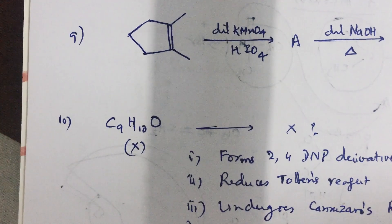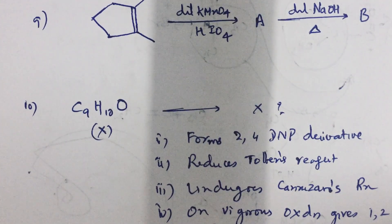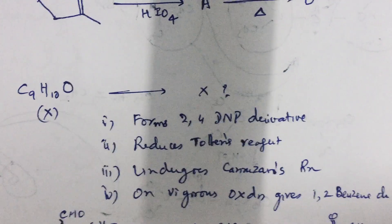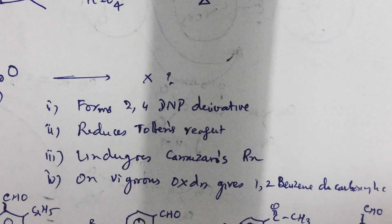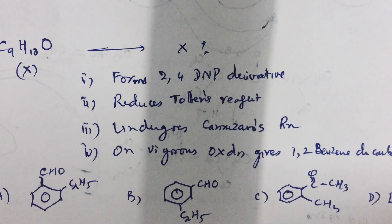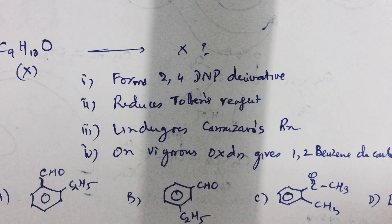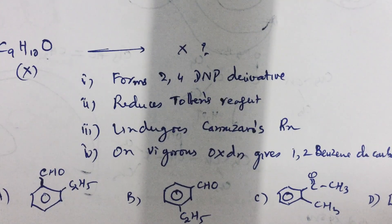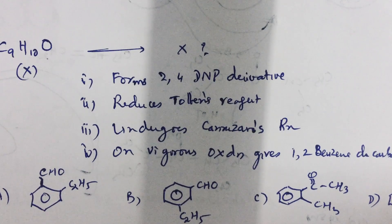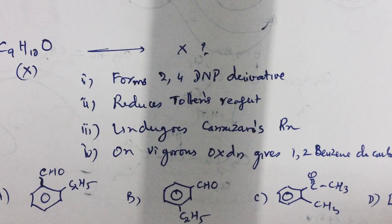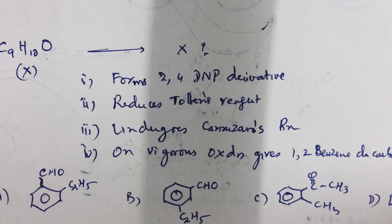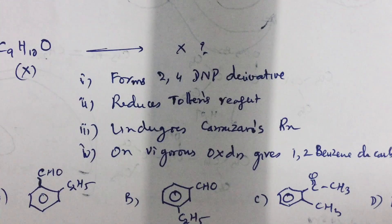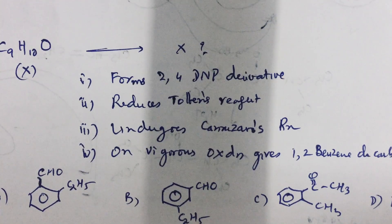And lastly, look at this question. C9H10O is X that forms 2,4-DNP derivative that reduces Tollens reagent that undergoes Cannizzaro reaction and on vigorous oxidation gives 1,2-benzene-dicarboxylic acid. What could be the compound? If you carefully see all the data, first fact indicates it is a carbonyl compound. Second fact indicates that it is an aldehyde. Third fact indicates that it does not have alpha hydrogens. And fourth fact indicates that it has two carbon chains on one-two positions. Based on all these arguments, the answer should be, can you work out, sir? As you rightly guessed, it is A.